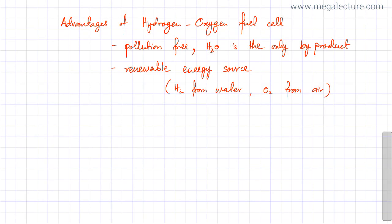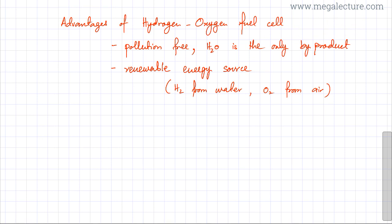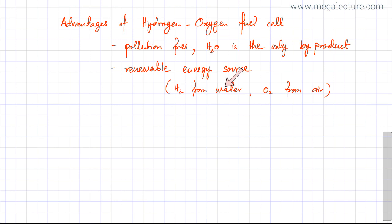When asked about advantages of the hydrogen-oxygen fuel cell, note first that it is pollution-free — water is the only byproduct, so there's no carbon dioxide produced and no global warming issues. The other important advantage is that it is a renewable energy source: hydrogen can be obtained from water and oxygen is easily available from air. Although we haven't yet developed efficient cheap methods of obtaining hydrogen from water, it remains renewable and could replace fossil fuels in the future.